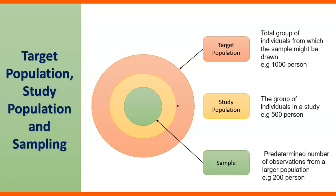And number third is the sample. So it is predetermined number of observations from a larger population. For example, 200 persons. So here you can see the first one is the target population, then you will select study population, and finally you will go for sample.